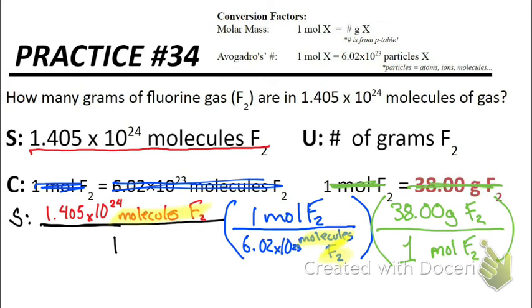Now, I know I've set this up correctly because molecules of F2 on top cancel with molecules of F2 on the bottom. Moles of F2 on top cancels with moles of F2 on the bottom. And I will be left with grams of F2, which is what we are looking for. So let's go ahead and calculate by multiplying my numerators together. So that would be 1.405 times 10 to the 24th times 1 times 38. Be careful when you type this value into your calculator. Just throw a pair of parentheses around it so that the order of operations doesn't get messed up.